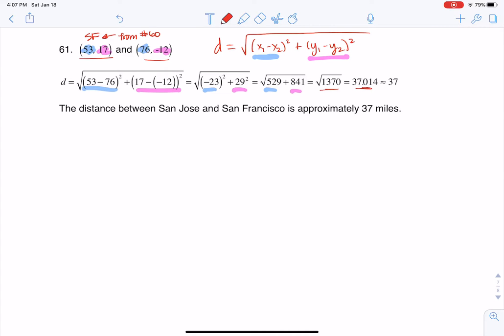Take that square root, and the directions say find the distance between San Jose and San Francisco to the nearest mile. So if I'm going to round this number to the nearest mile, that gives me 37. All right, thanks so much everyone. Bye.